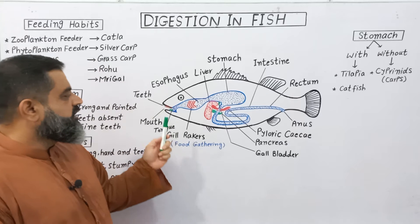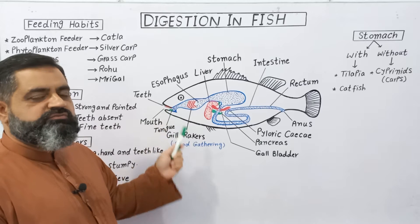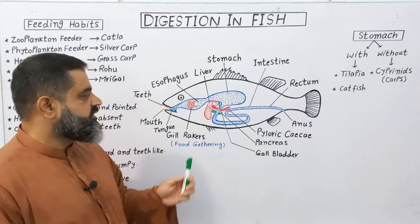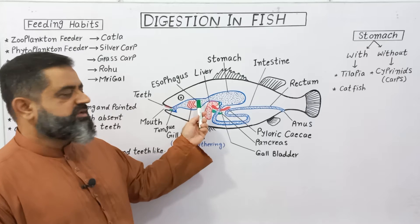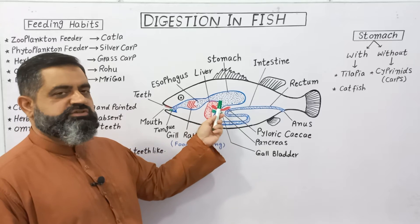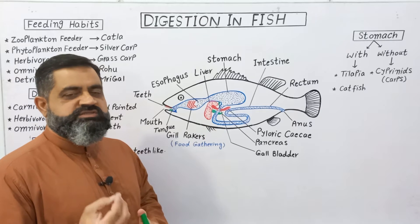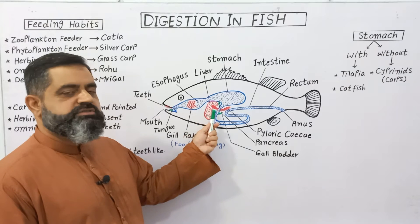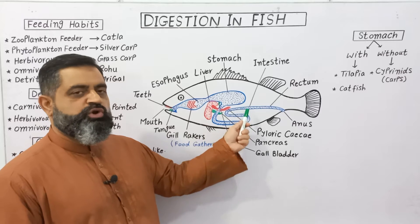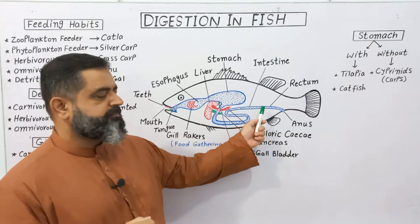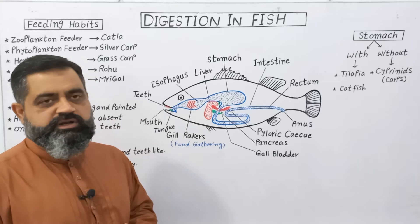The mouth leads into the oral cavity. Some fish contain teeth and tongue while others lack them, depending upon the species. The oral cavity leads into the pharynx, which leads into the esophagus. The esophagus leads into a J-shaped, sac-like stomach. The stomach leads into the small intestine, which connects to the large intestine, then the rectum, and undigested food is released through the anus.